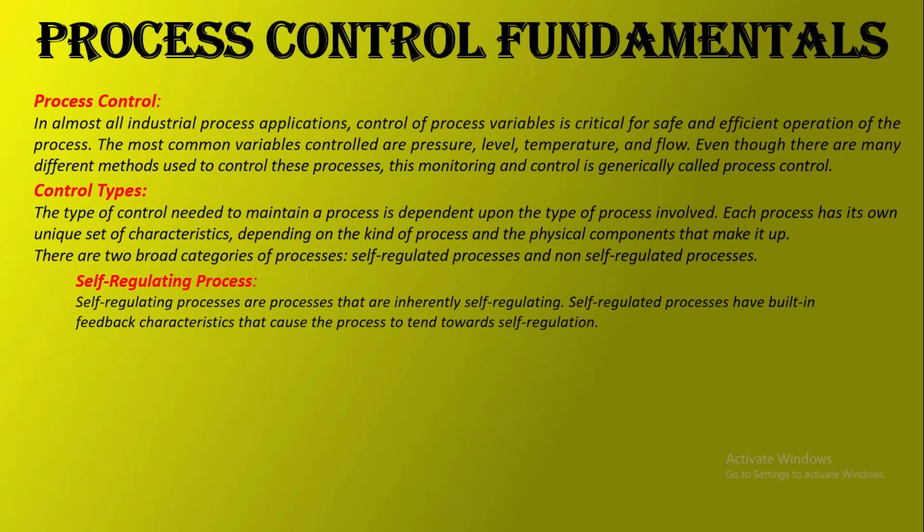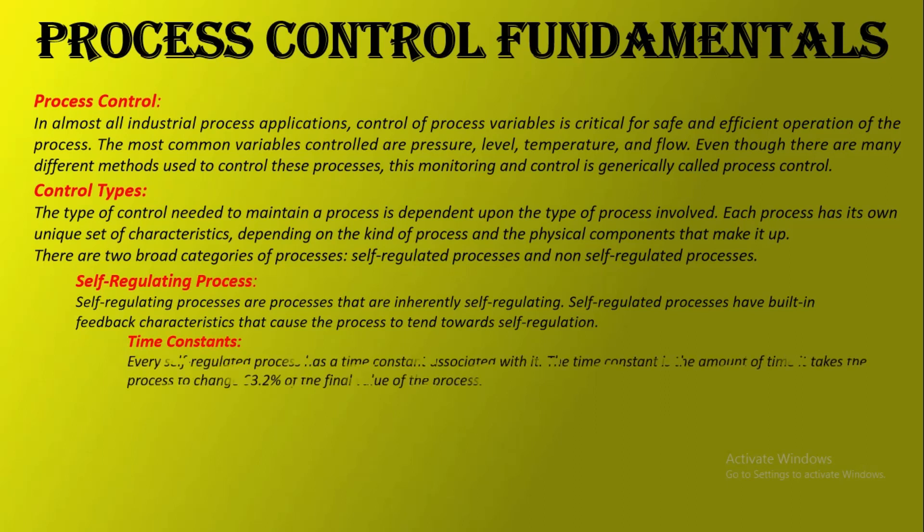What happens if the outlet is opened one-eighth of a turn and water leaving the tank changes to a rate of 25 gallons per minute? Since this is a self-regulating process, the level will stabilize at a new position. Flow out of the tank is proportional to the square root of the differential pressure across the output wall. As level decreases, the differential pressure also decreases, causing the drainage rate to decrease until it equals the fill rate and the tank reaches a new equilibrium point.